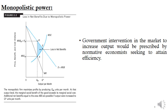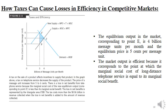Government intervention in the monopolistic market to increase output would be prescribed by normative economists seeking to attain efficiency. Now let's examine how taxes cause losses in efficiency in competitive markets. When a product or service is taxed, the amount traded is influenced by the tax paid per unit as well as by the marginal social benefit and marginal social cost of the item — the tax distorts decisions of market participants, as illustrated in Figure 2.3.